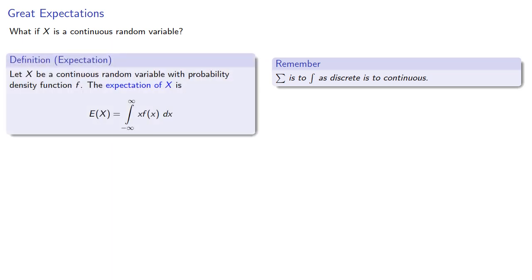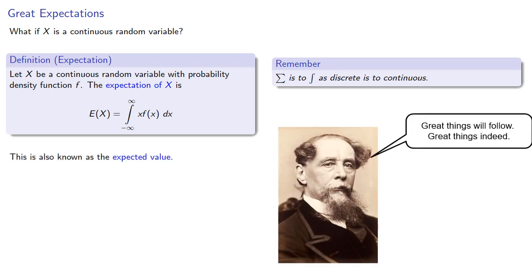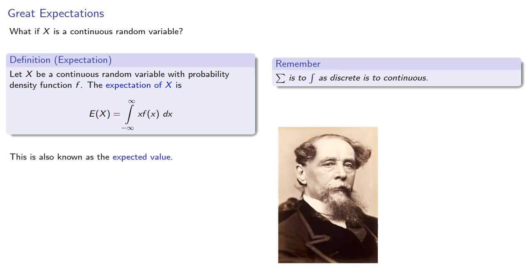Let x be a continuous random variable with probability density function f. The expectation of x is defined as the following integral, also known as the expected value. Like the expected value of a discrete random variable, this corresponds to the average value of the random variable.